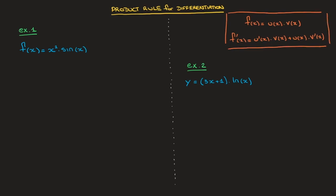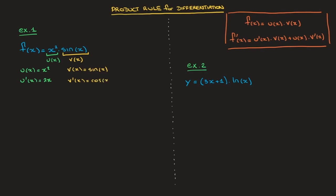Let's see right away how to use it to differentiate the first function. Looking at f of x, we can see that this is a product of two functions. We have x squared, which I'll call u of x, multiplying sine of x, which I'll call v of x. So u of x equals x squared, and therefore u dash of x equals 2x, and v of x equals sine of x, and therefore v dash of x equals cosine of x.